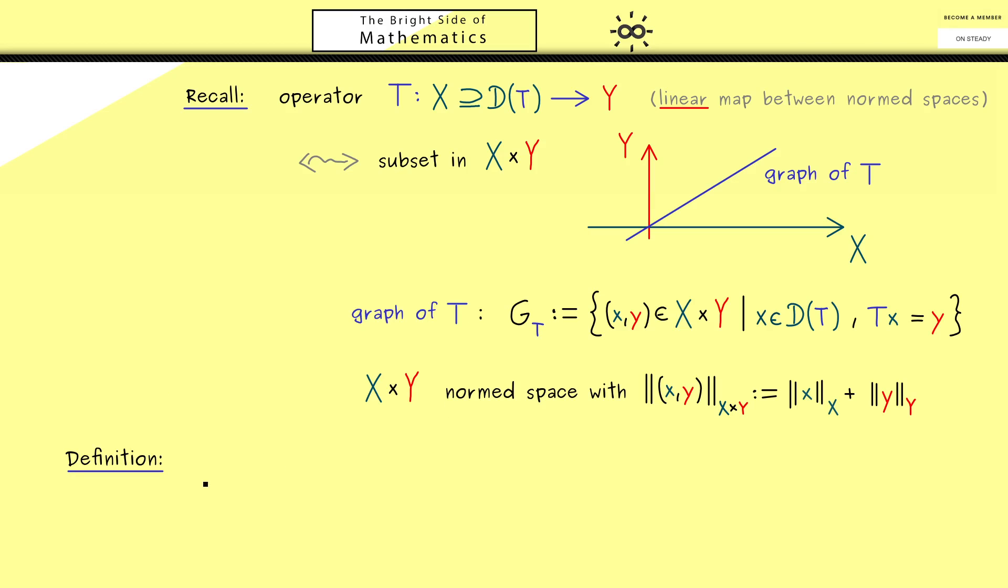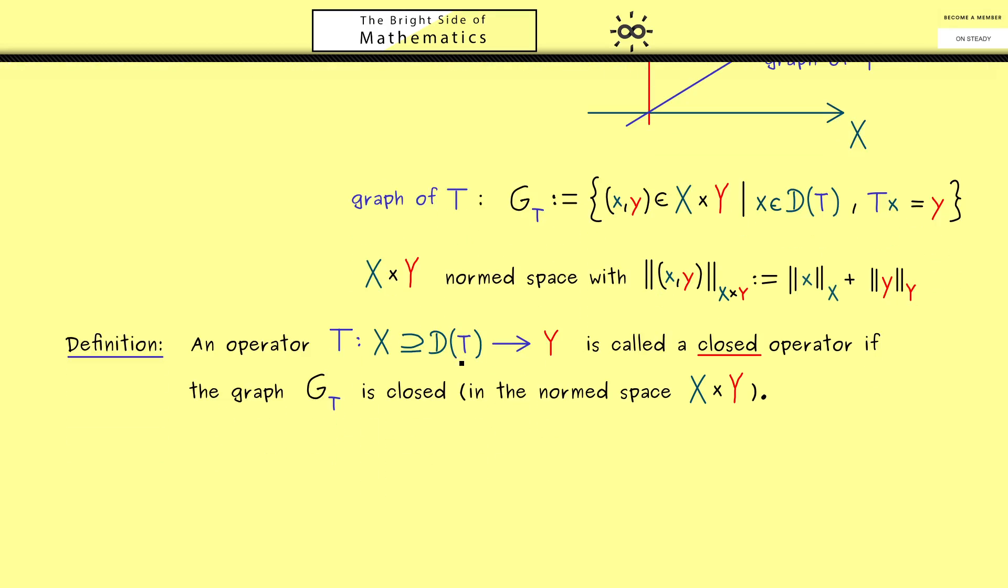In the graph of T, we can also measure distances, or more precisely, we can use all the topological terms we have for the graph of T. In particular, we can check if the graph of T is a closed set. That's exactly what we do now to define so-called closed operators. We call T a closed operator if its graph is a closed set in the normed space X×Y.